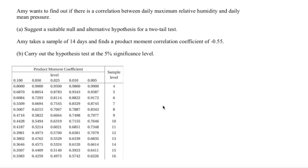The final question: Amy wants to find out if there is a correlation between daily maximum relative humidity and daily mean pressure. Part A asks for suitable null and alternative hypotheses for a two-tailed test. H0 is rho equals zero, meaning no correlation. H1 is rho not equal to zero, which is the two-tailed form.